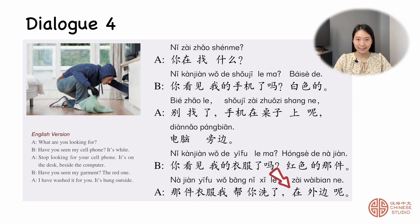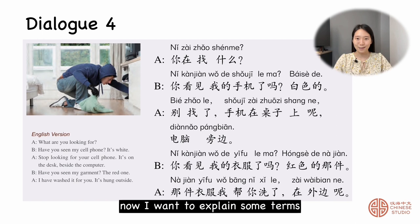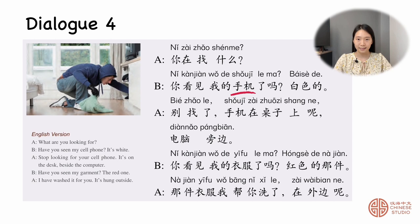Now I want to explain some terms. 手机 — mobile phone. 别 — do not. 旁边 — beside/next to. 洗 — to wash.